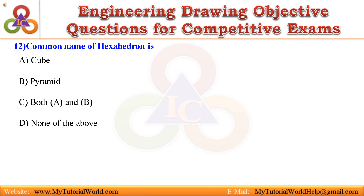12. Common name of hexahedron is: A. Cube. B. Pyramid. C. Both A and B. D. None of the above. Answer is: Cube.